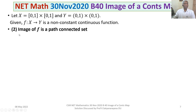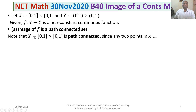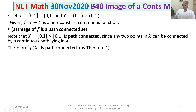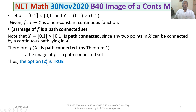Let us examine Option 2: the image of f is path-connected. Note that X = [0,1] × [0,1] is path-connected, because any two points in X can be connected by a continuous path lying in X. Therefore, f(X) is path-connected by Theorem 1, since the continuous image of a path-connected space is path-connected. So the image of f is a path-connected set — Option 2 is true.